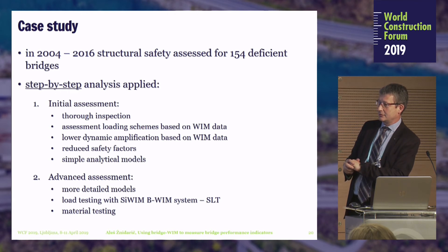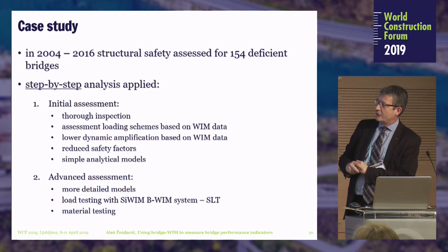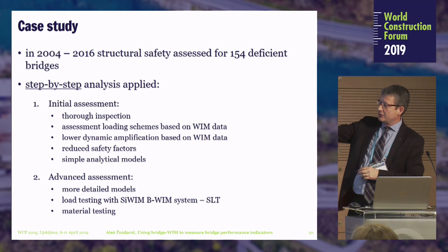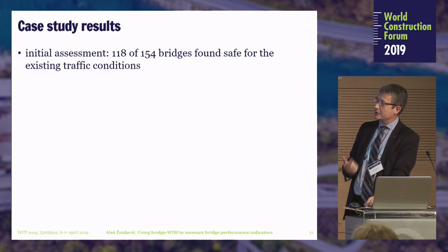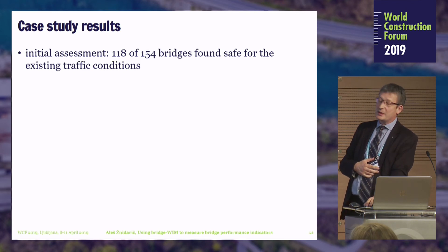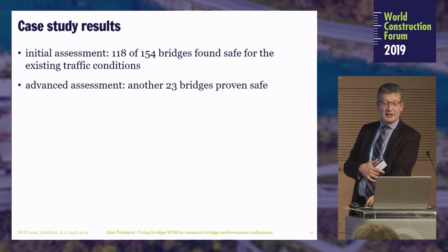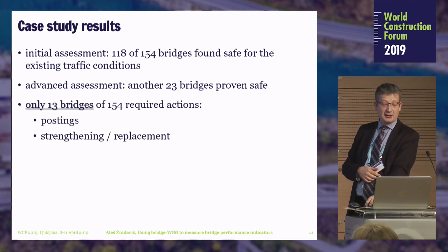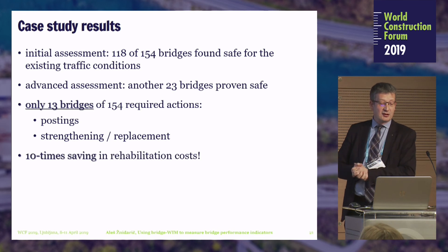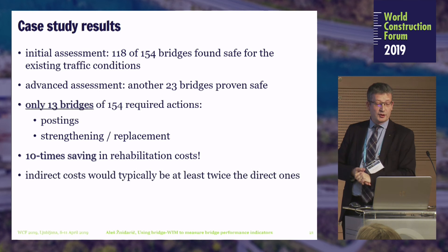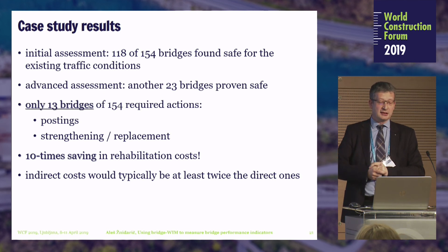Just a short case study: we did 154 assessments of bridges in the last 15 years. First we started with initial assessments using available data, and then only in the second stage performed advanced assessment with the measurements I just described. The results are quite important. Of those 154 bridges, 118 were already proven safe for existing traffic conditions after initial assessment, and an additional 23 were proven safe when we performed the measurements. Only 13 required severe actions like posting, strengthening, and replacement. This basically means around 10 times saving in rehabilitation costs — and which is even more important, you should be aware that indirect costs would typically be at least twice, if not 3-4 times, higher than the direct costs.